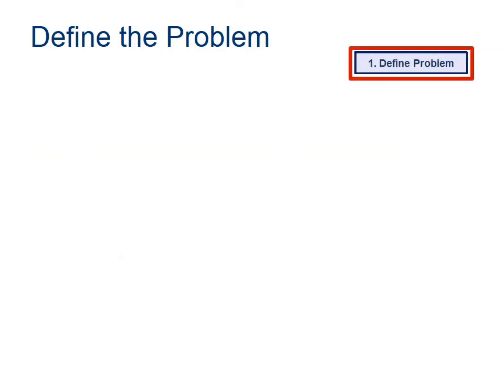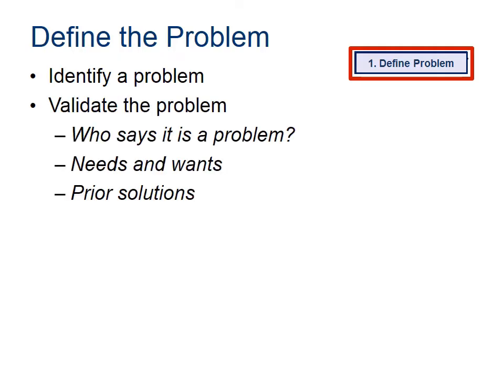The first step is to define the problem. You have to identify that it's a problem, and then we say validate the problem — so who says that it's a problem? Is it just the fact that you don't like the pink skateboard you got for Christmas and you want to make it blue? Well, that's not really a problem. You want to look at whether it's something that's needed or something that's wanted. Then you also want to look at prior solutions — that's engineering code for 'does a solution already exist?'